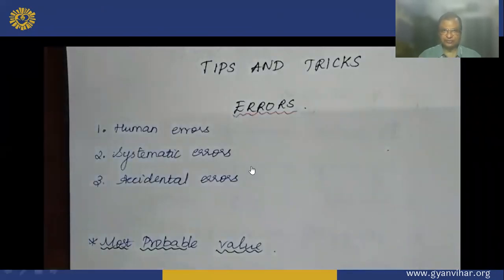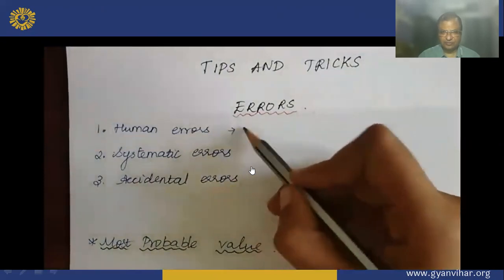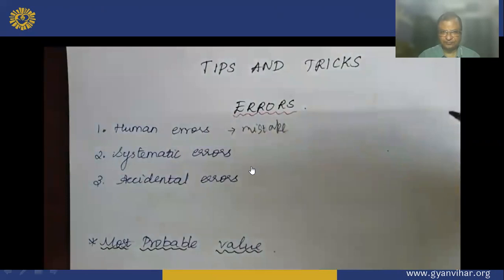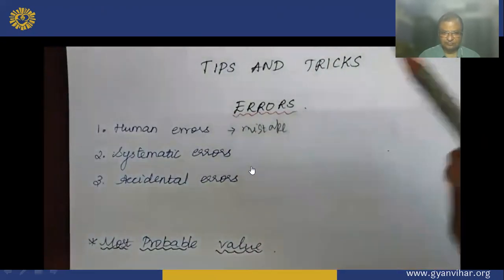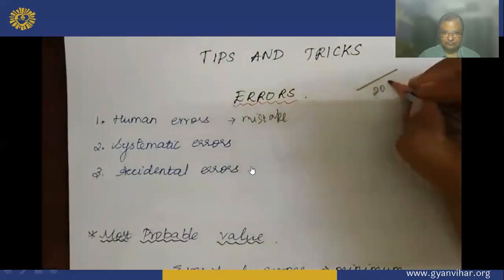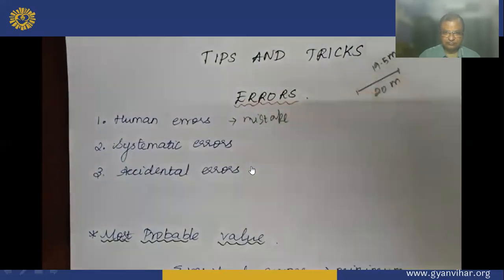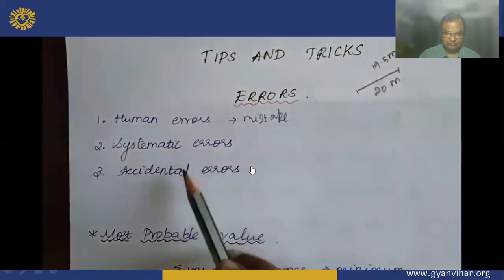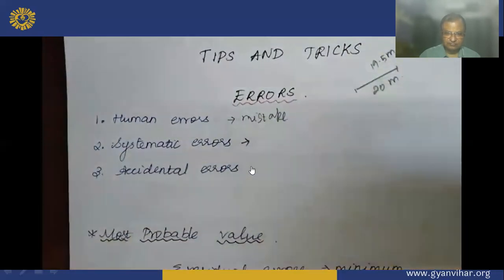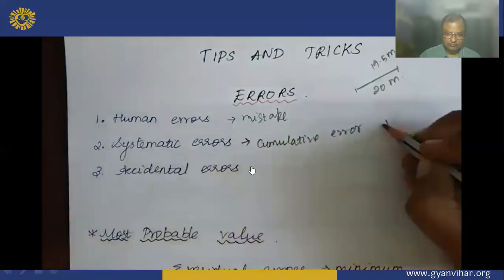Welcome to Tips and Tricks. Today we are going to see the types of errors. There are three main types of errors: human error, systematic error, and accidental error. Human errors are mistakes committed by humans while taking readings from a surveying instrument. Systematic errors are errors committed by manufacturers while manufacturing any surveying instrument — for example, if a tape is set to be 20 meters long but is actually only 19.5 meters long, every time a person uses this tape they make a consistent error. This type of error is called systematic error, and because it accumulates every time, it is also called cumulative error. It will be either only positive or only negative.